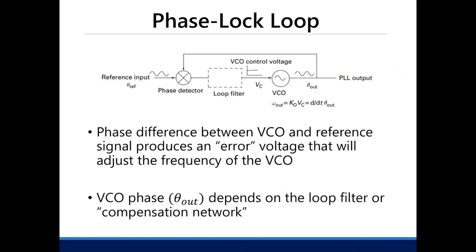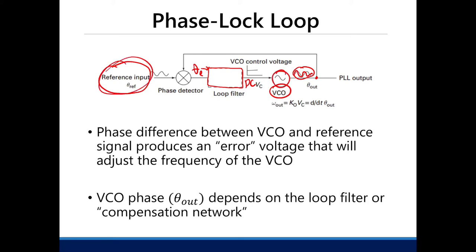In a phase-lock loop, you mix the reference input with the VCO output to obtain the phase error. This error is filtered by a narrowband loop filter, and the output becomes a DC voltage that controls the VCO frequency. Until the VCO is coherent with the reference, the PLL output is unstable — once coherence is achieved, the PLL output stabilizes.